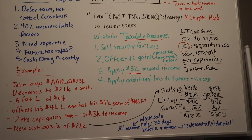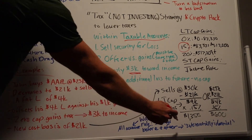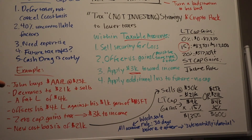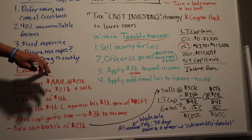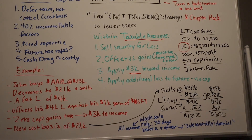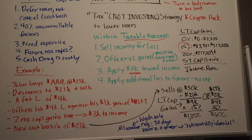The wash sale rule — in a nutshell — says that 30 days before and after a sale occurs, you cannot buy a substantially identical asset. So you could be sitting in cash for at least 30, maybe 60 days, missing potential market gains. There's a stat: over the last 40 years, just 10 days made up two-thirds of all market gains. That's 10 out of 10,000 days — good luck guessing which ones. Missing those days is basically a lottery ticket of bad luck.